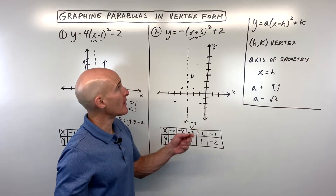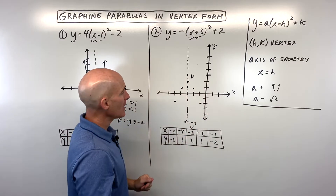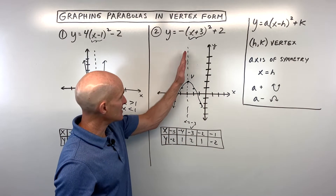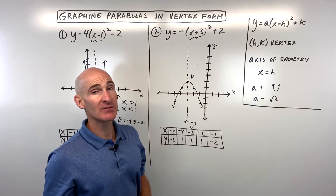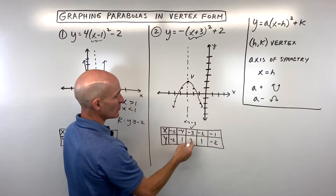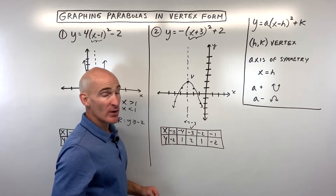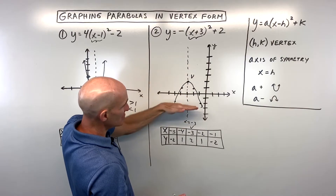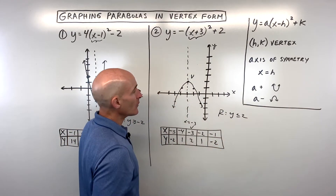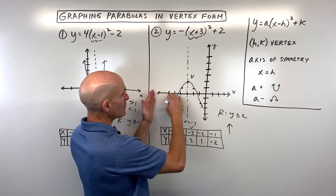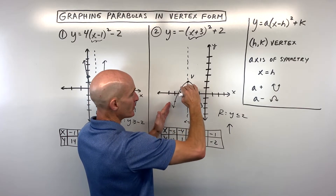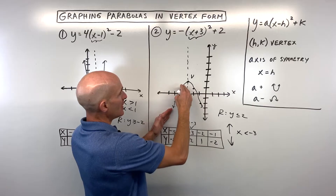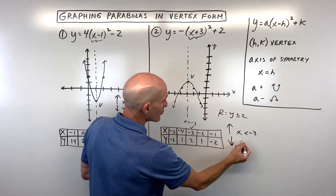If you want to find the y-intercept, just put 0 in for x — that's where it crosses the y-axis. The axis of symmetry is x equals negative 3. Does the graph have a maximum or minimum? This graph has a high point — a maximum. The maximum is at the y-coordinate of the vertex, so maximum of 2. The domain is all real numbers. The range is y less than or equal to 2. The graph is increasing when x is less than negative 3, and decreasing when x is greater than negative 3.